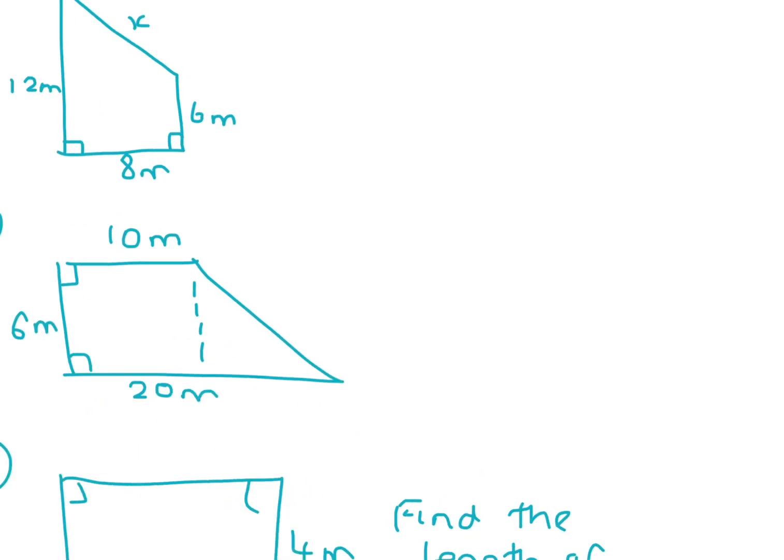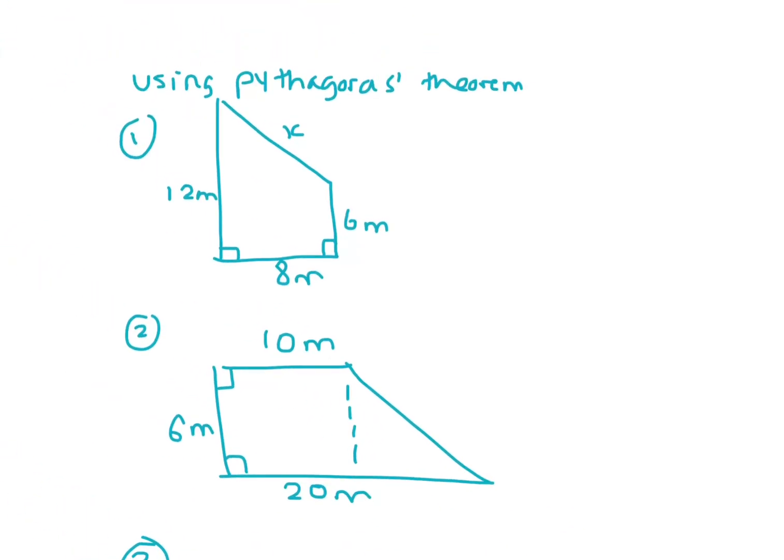This is going to look at some questions using Pythagoras' theorem. So if we look at this shape here, in order to use Pythagoras' theorem to find what X is, we first of all have to form a right-angle triangle. So if we put a line across here, that would form our right-angle triangle.